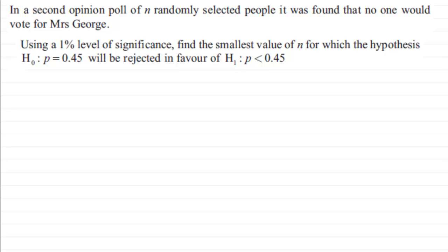Welcome back if you had a go. So what we've got here is that in a second opinion poll of N randomly selected people it was found that no one would vote for Mrs George. Using a 1% level of significance, find the smallest value of N for which the hypothesis, that is the null hypothesis, P equals 0.45, will be rejected in favour of the alternative hypothesis that P is less than 0.45.